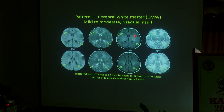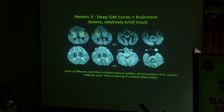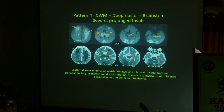In severe prolonged HIE, the cortex, basal ganglia, and brainstem are all involved. Severe brief insult involves the posterior limb of internal capsule, ventrodorsal thalamus, and posterior putamen. With this, I conclude. Thank you for giving me the opportunity.